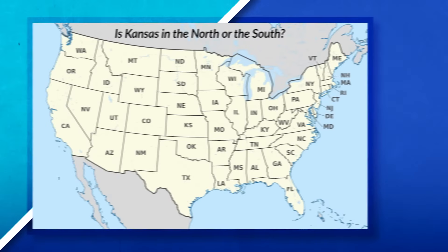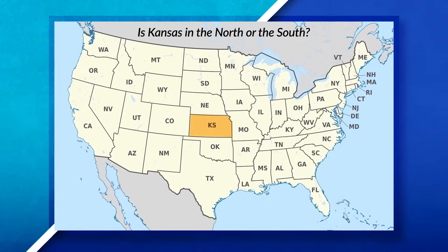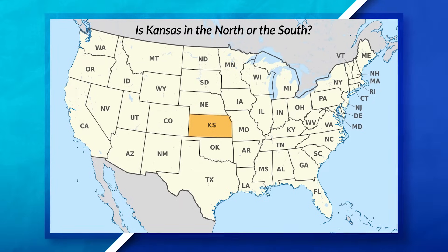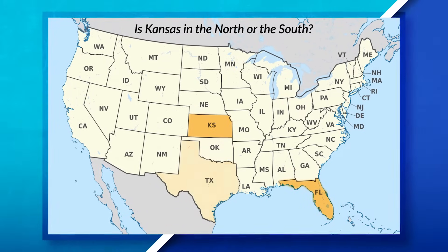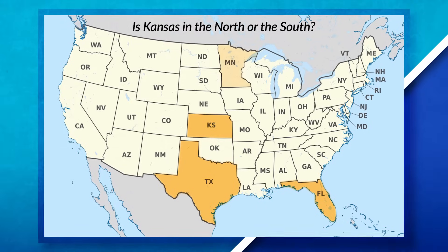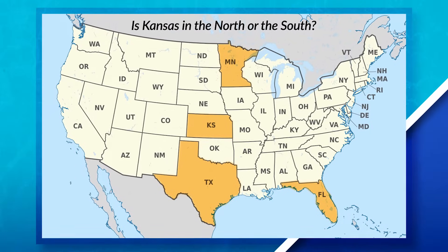Another example: is Kansas a northern state or a southern state? Depending on where you live in the United States, your answer might change. If you're from Florida or Texas, you might say Kansas is a northern state, but for someone from Minnesota, Kansas definitely feels more like a southern state. A general rule of thumb is that whenever directions are part of a region's name, it's going to be a perceptual region, because cardinal directions use relative location that changes based on your own location.